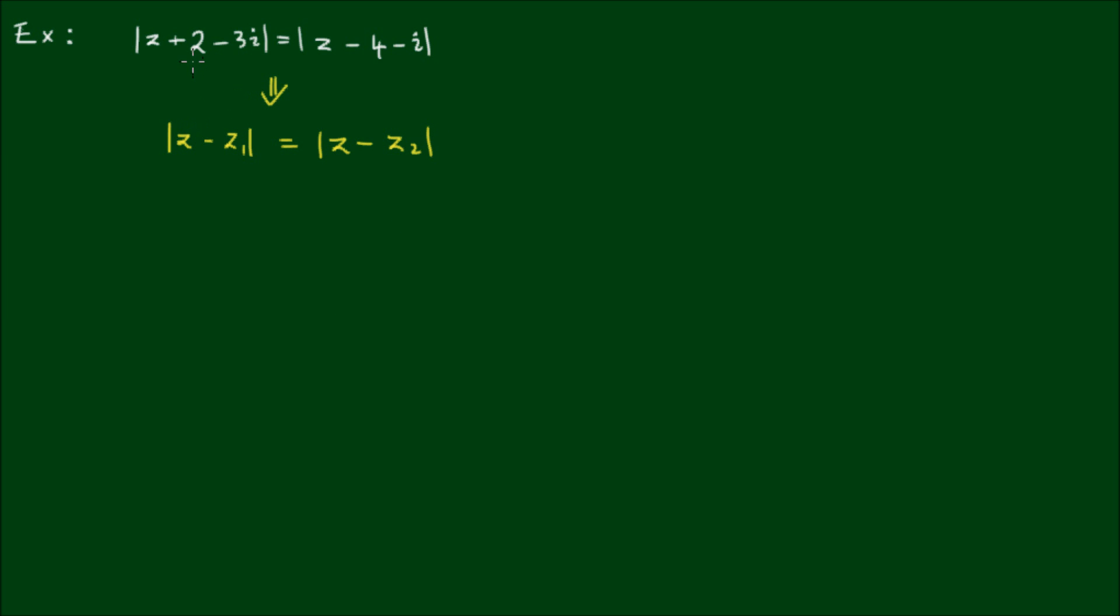So from the left-hand side, if I take a negative out of the 2 - 3i, I will get minus of (-2 + 3i). So I have |z - (-2 + 3i)| = |z|. And if I take a negative out of the -4 - i, I get minus outside of 4 + i.